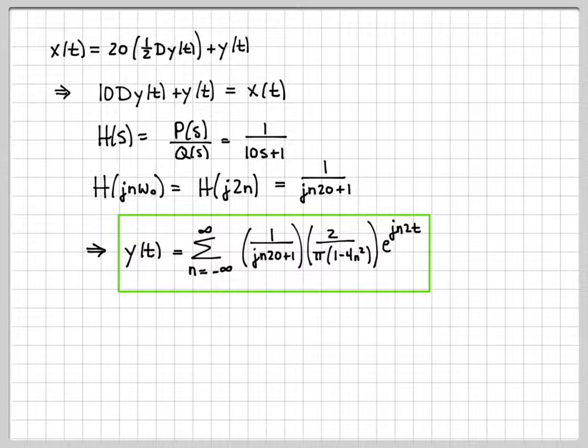So this final boxed equation is an equation in the time domain that represents the output signal of that system. And we used Fourier series techniques to come up with this equation.